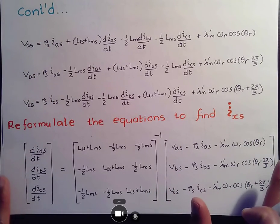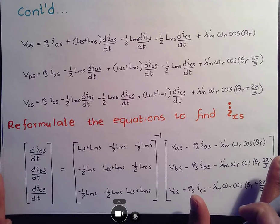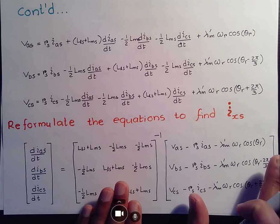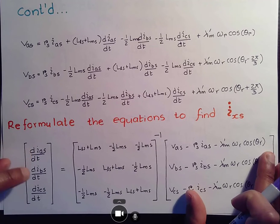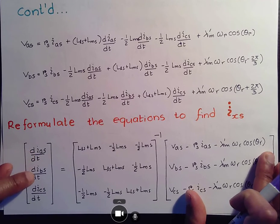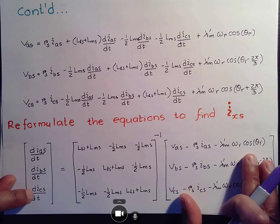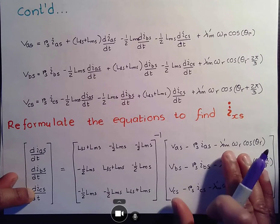And that leaves us with these voltage equations. And since we have our inductance matrix on the left, we can take the inverse so that we can directly find the rate of change of IAS, rate of change of IBS, rate of change of ICS with respect to time.